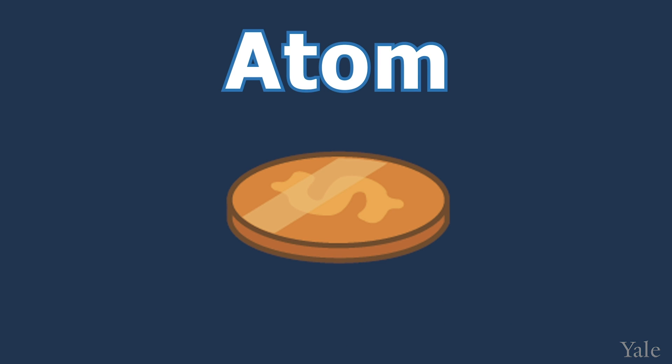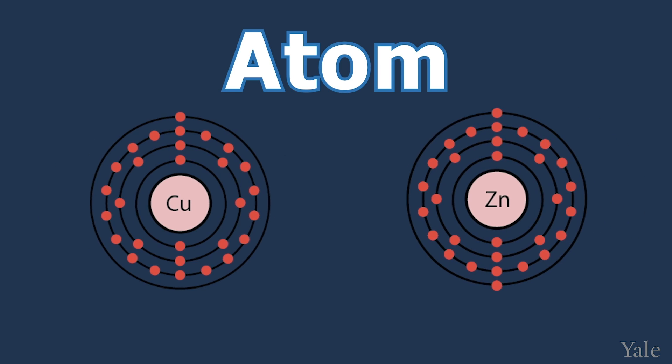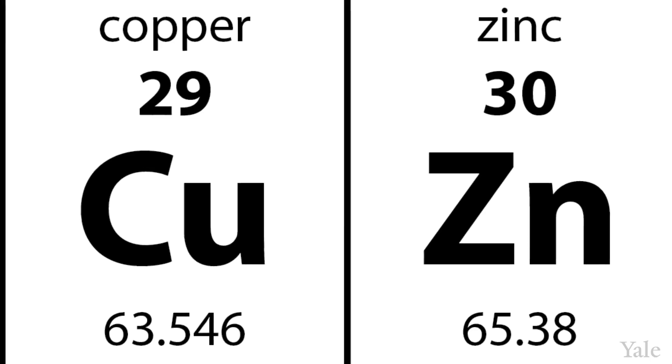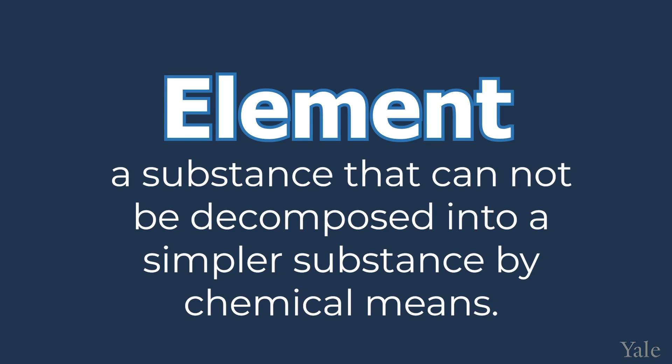However, all of the sextillions of atoms in a penny aren't the same. A penny is made up of copper and zinc atoms. Copper and zinc are just two examples of the 118 different elements that exist. An element is a substance that cannot be decomposed into a simpler substance by chemical means. Essentially, if you have an element, no reaction with heat or another chemical can break it down into a simpler substance.